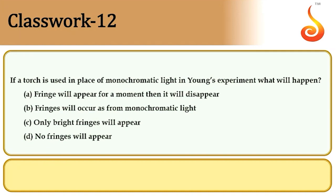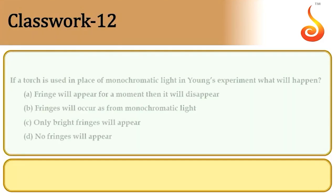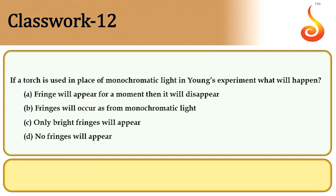Example 12: If a torch is used in place of monochromatic light in Young's double slit experiment, overlapping of fringe patterns occurs because torch light contains all wavelengths. Fringes cannot be seen distinctly — no fringes will appear as a continuous band forms. D is the correct choice.